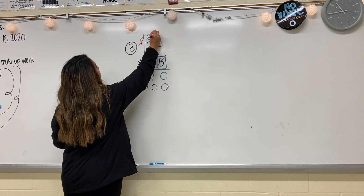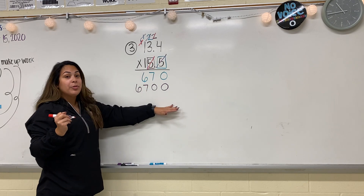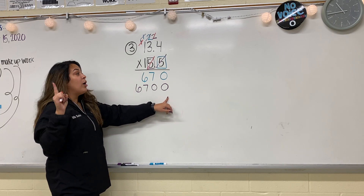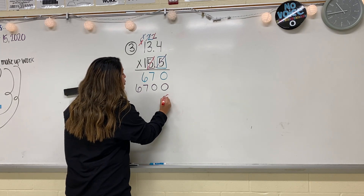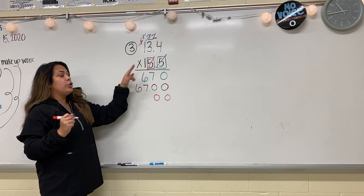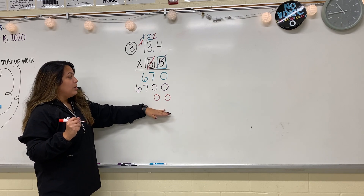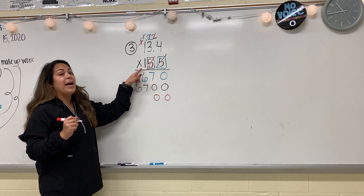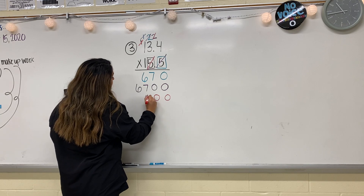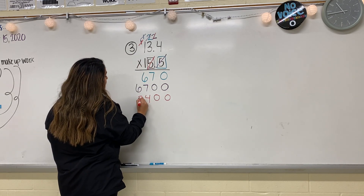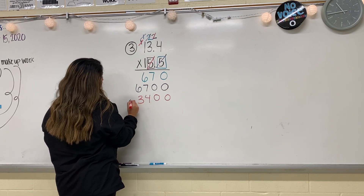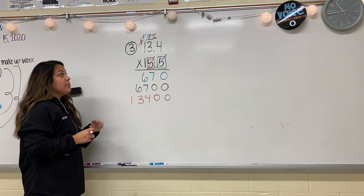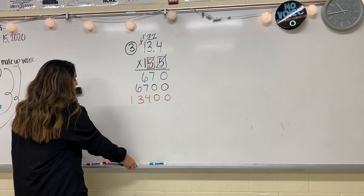But before I do that, I'm going to mark out the numbers I don't need anymore. Remember, this is just as if I was working with a multi-digit whole number. Instead of putting one place value holder, I'm going to put two because I'm now two place values into the problem. I put my two place value holders. Now I can multiply 13 and four tenths by one. Four times one is four. Three times one is three. And one times one is one. I don't have any other numbers that need to be multiplied by one, so now I'm going to add.